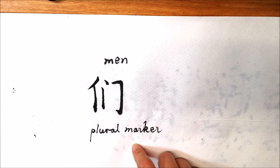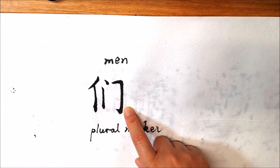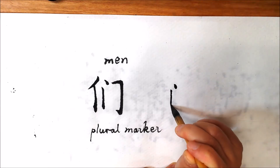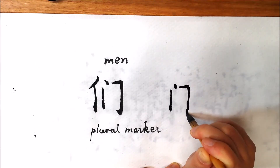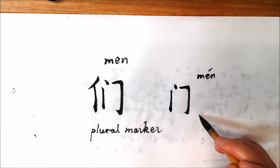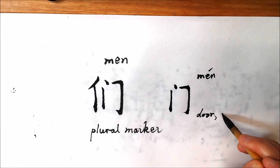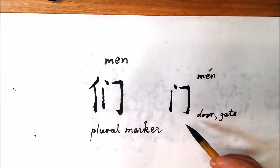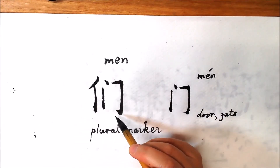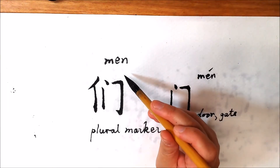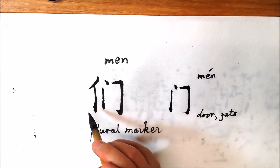If you watched my previous video, you will know more about the right part of this character. Here is a character that sounds 'men' — it means door or gate. But here, it is a component of this character 们, and it marks the sound as 'men'. The left part of this character is a radical.